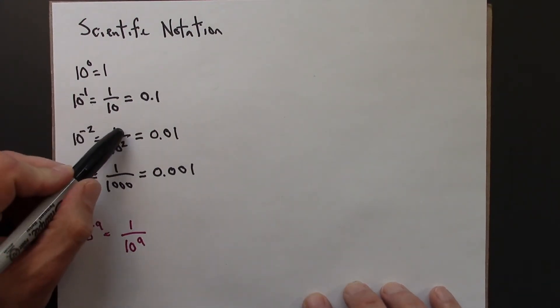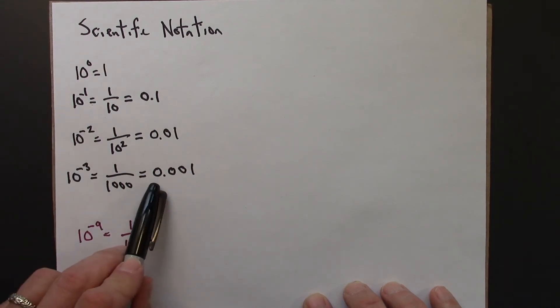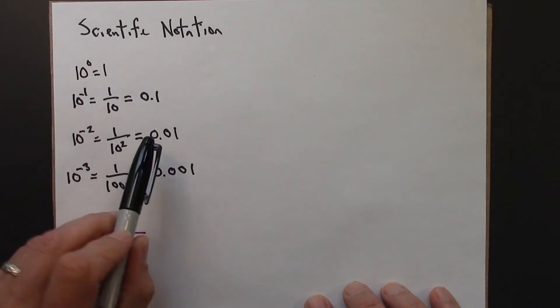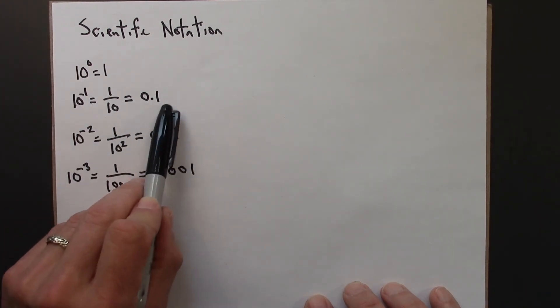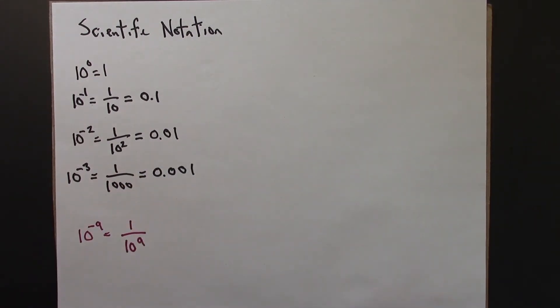So 10 to the minus 2, 1 over 10 squared, 0.01. 10 to the minus 3, 0.001, and so on. And the pattern here, minus 1 means one spot to the right of the decimal. Minus 2 is two spots to the right of the decimal, and so on.